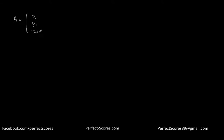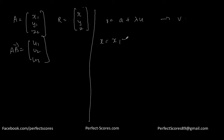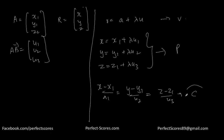I hope you're able to understand that. Let me summarize: if you have vector A at (x1, y1, z1) and any point on the line at (x, y, z), and vector AB equals (u1, u2, u3), then you have three equations. The vector equation is R equals A plus lambda U. The parametric equations are: x equals x1 plus lambda·u1, y equals y1 plus lambda·u2, and z equals z1 plus lambda·u3. The Cartesian equation is (x minus x1)/u1 equals (y minus y1)/u2 equals (z minus z1)/u3.